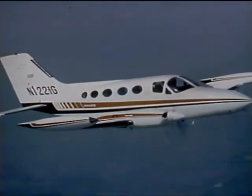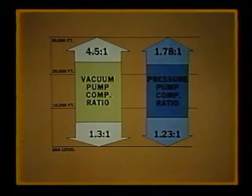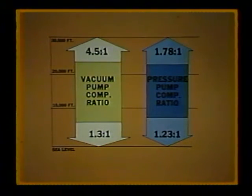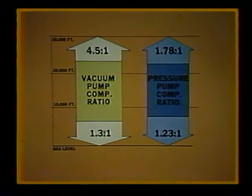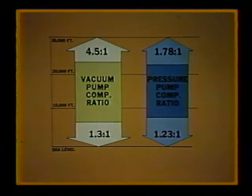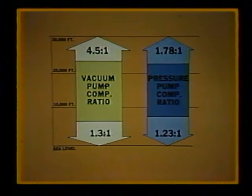As aircraft began to fly at higher altitudes where the air is extremely thin, further changes in aircraft pneumatic systems became necessary. To illustrate this: at sea level, a typical dry air vacuum pump has a compression ratio of 1.3 to 1. At 30,000 feet, however, its compression ratio is 4.5 to 1. Using the same pump as a pressure pump instead of a vacuum pump, its compression ratio at sea level is 1.23 to 1, as compared to 1.78 to 1 at 30,000 feet.